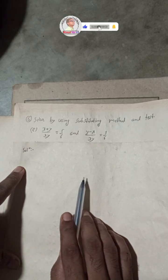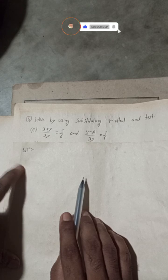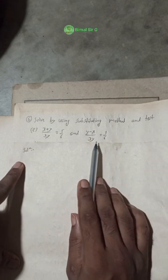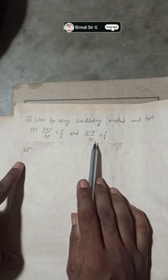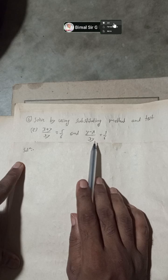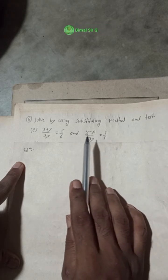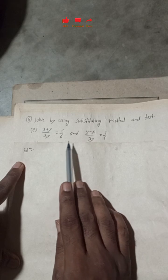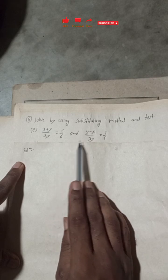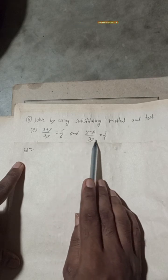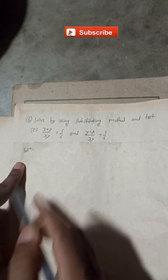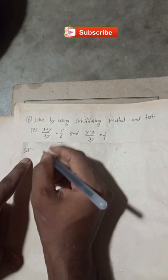Hi everybody, welcome back to Bimal Saharji YouTube channel. This question was requested by one of my subscribers. The question is: solve by using the substitution method. We have (x + y) / xy = 5/6 and (y - x) / xy = 1/6.